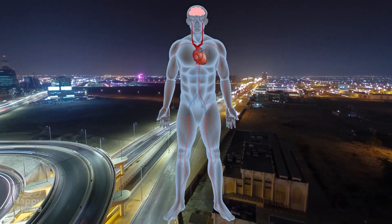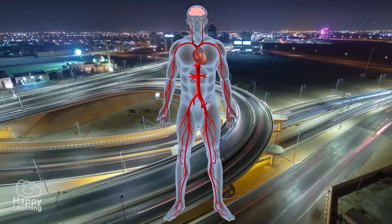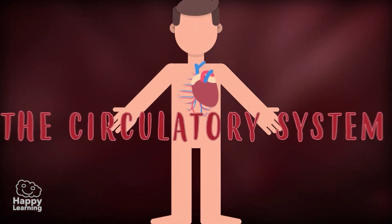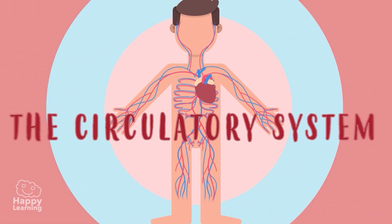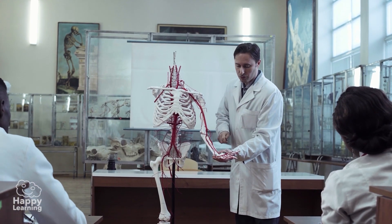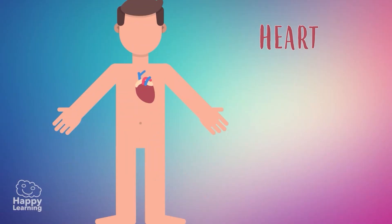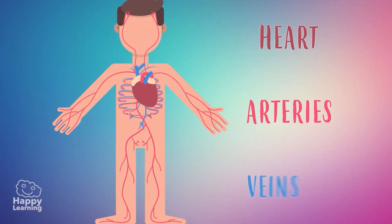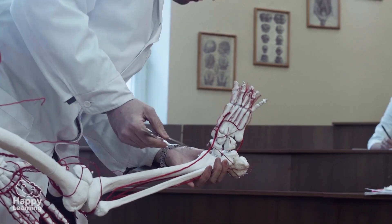Hello friends! Welcome to a new Happy Learning video. Today, we're going to learn about the circulatory system of the human body. The main function of the circulatory system is to carry, through the blood, the nutrients to the cells of our body. It is formed by the heart, arteries, and veins, and its proper functioning is essential for us to have good health.